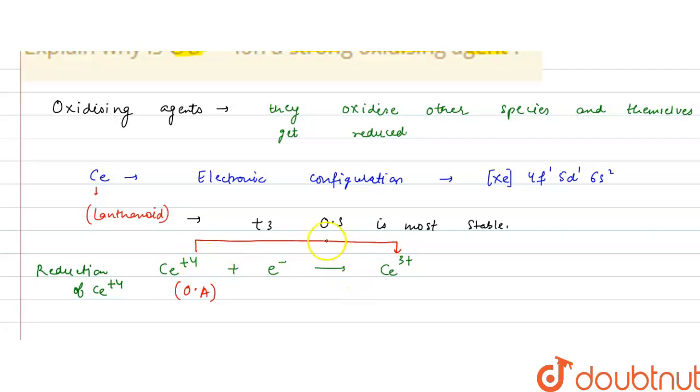It is acting as a strong oxidizing agent because it has reduced itself. As oxidizing agents, they reduce themselves and oxidize other species. So it acts as a strong oxidizing agent because it oxidizes other species and it reduced itself to cerium 3+, which is the most stable oxidation state for lanthanoids.